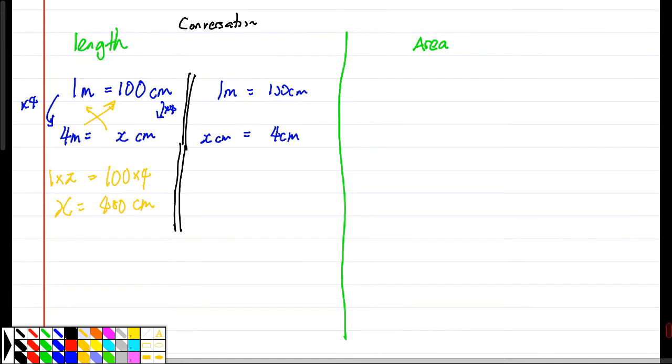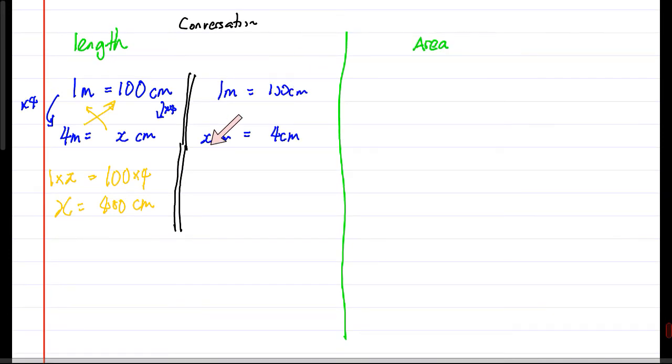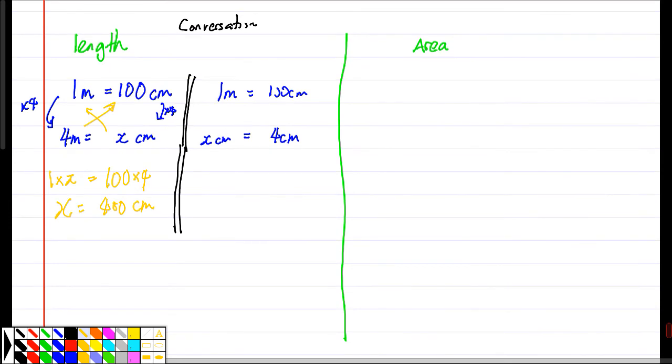Now next one. Let's say I have 1 meter equals 100 cm, so 4 cm is equal to how many meters? So I let the unknown be X. So let's try the trick again. This is wrong, it's not... yeah.